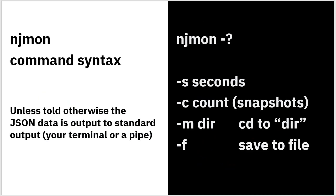So let's look at the NJMon command syntax. If you type njmon with a minus question mark, it will give you the help information to understand all the various options. It's a little bit like NMON: -s is the number of seconds between snapshots, and -c is the count of snapshots it will make before it stops. You can also use -M with a directory, and it will CD to that directory before creating any files. If you use -F, it will save the JSON format into a file, and then you can process the data from there on.